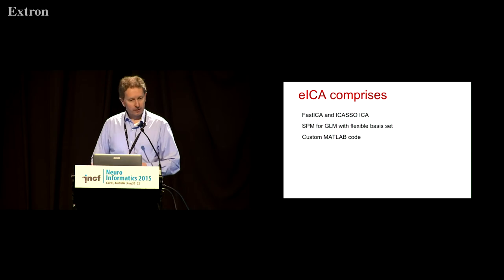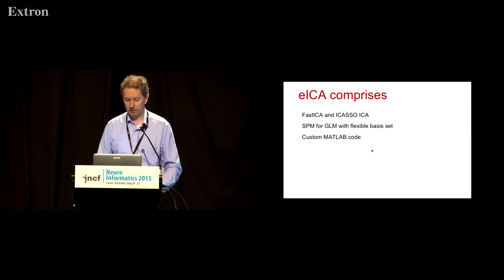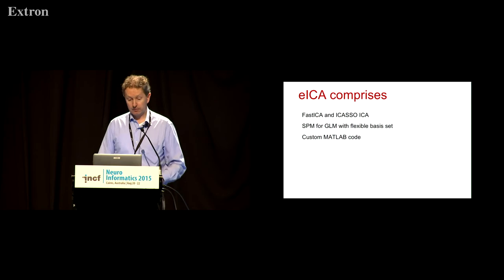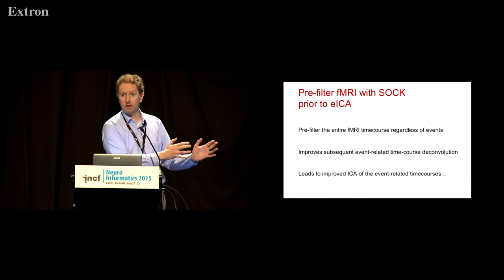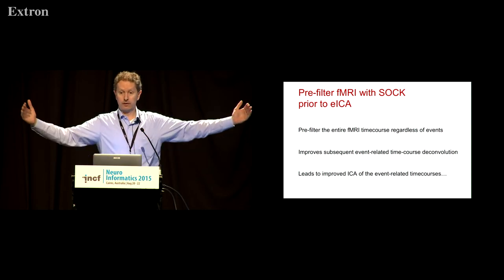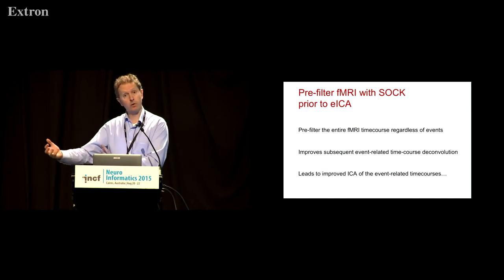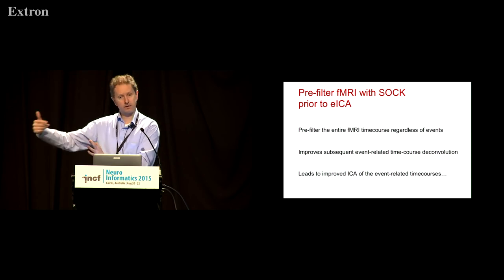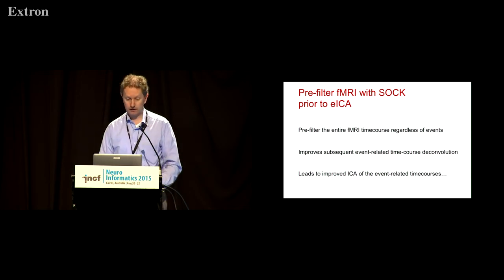We've developed a package we're about to release that does this analysis in an automated way — using FastICA and ACASO software, SPM for the general linear model, and custom MATLAB code implementing the rest. We've gone one step further and combined the two approaches I've talked about: we can pre-filter our EEG-fMRI or event-related data with the SOC filter. That filters the whole fMRI time course, identifies noise sources based on the entire time course, and removes them before we do event-related ICA. We then deconvolve the filtered time course with the GLM and apply ICA again on the event-related time courses.